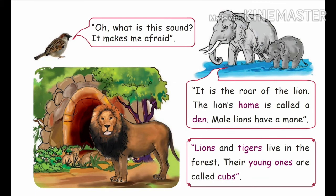Chikku asks: 'What is this sound? It makes me afraid.' The elephant explains it is the roar of the lion. The lion's home is called a den. Male lions have a mane. Lions and tigers live in the forest, and their young ones are called cubs.